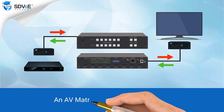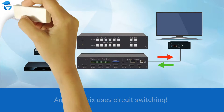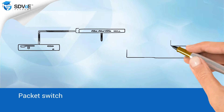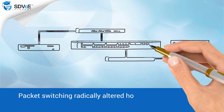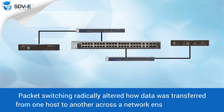A modern day example of circuit switching is an AV matrix. The concept of packet switching was developed to radically alter how messages or data was transferred from one host or device to another across a network.